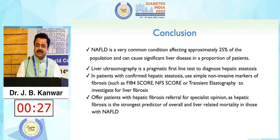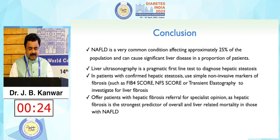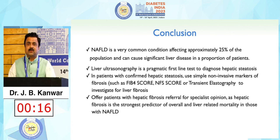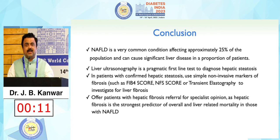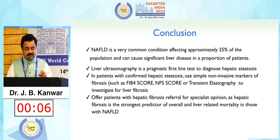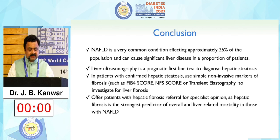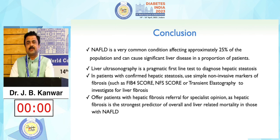To conclude: NAFLD is a very common condition affecting about 25% of the general population and can cause significant liver disease in a proportion of patients. Liver ultrasound is a pragmatic first-line test to diagnose NAFLD, and in patients with confirmed hepatic steatosis, simple non-invasive measures like FIB-4 score, NFS score, or transient elastography are available to investigate liver fibrosis. Patients with liver fibrosis should be offered early specialist referral, because fibrosis is the strongest predictor of overall liver-related mortality in patients with NAFLD. Thank you.